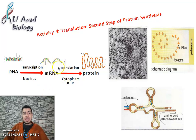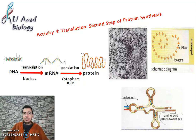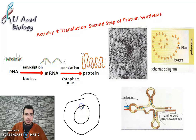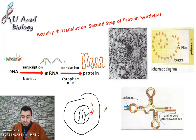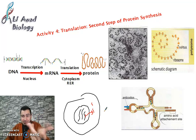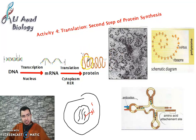Now, what happens to the mRNA after its formation? The mRNA, as we agreed before, is a copy of a gene — single-stranded — formed inside the nucleus. It separates from the DNA and exits to the cytoplasm, in order to be translated into proteins.